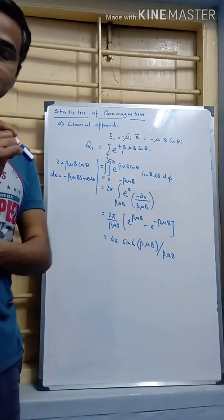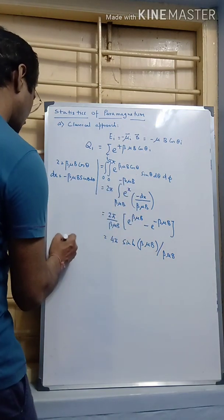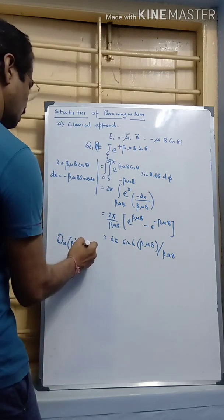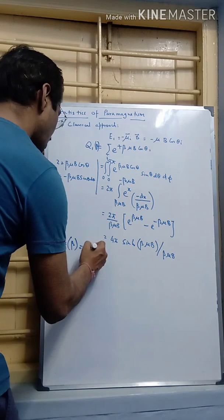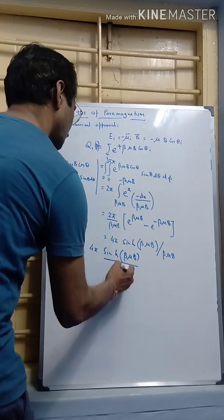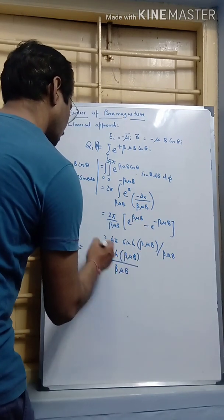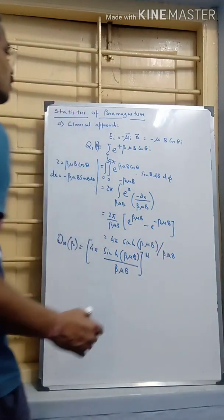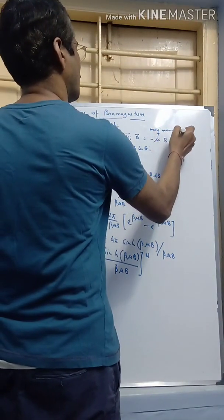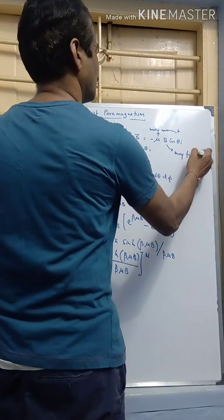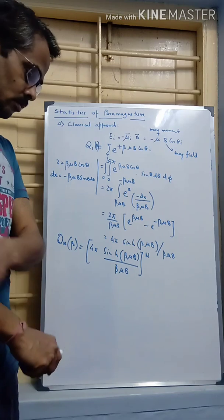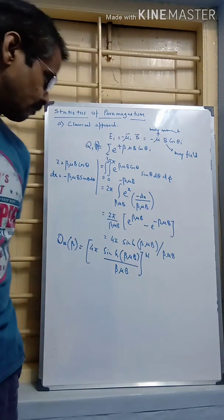For N distinguishable particles, Q_N(β) can be written as Q₁(β) to the power N. So Q_N(β) equals [4π sinh(βμB) / (βμB)]^N, where B is the corresponding magnetic field and μ is the magnetic moment. This is the N-particle partition function.